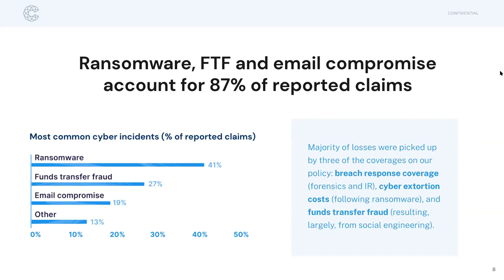Funds transfer fraud is the next segment. Someone in finance receives an invoice to pay a vendor a certain amount of money. We've even seen this occur in HR, where someone receives an email to change their bank routing information. Everything looks right about the email, except the individual receiving it doesn't put forth the extra effort of calling the vendor or the individual that requested the routing change to confirm whether the email was legitimate. Fraudulently, funds are transferred to the wrong organization. Fortunately, Coalition has had quite a bit of success in recovering these funds, but there are times where these funds are very difficult to recover — they've already gone through the banking system to foreign entities and adversaries.